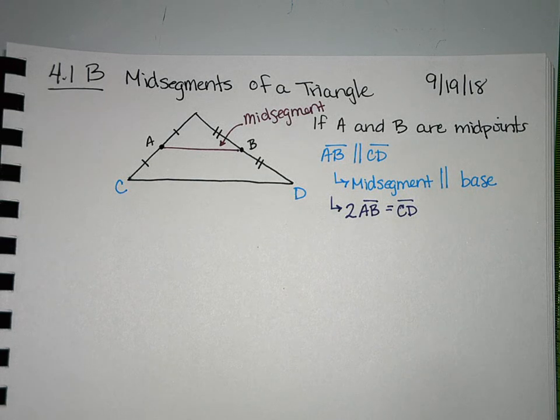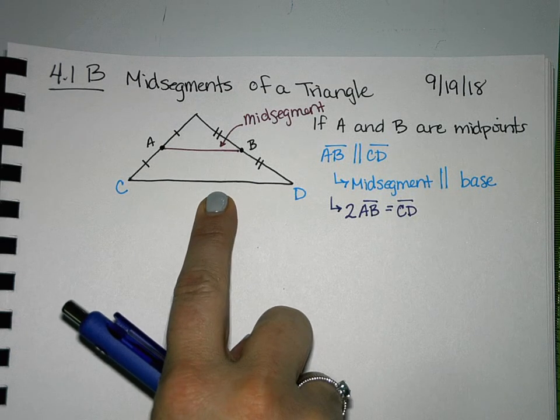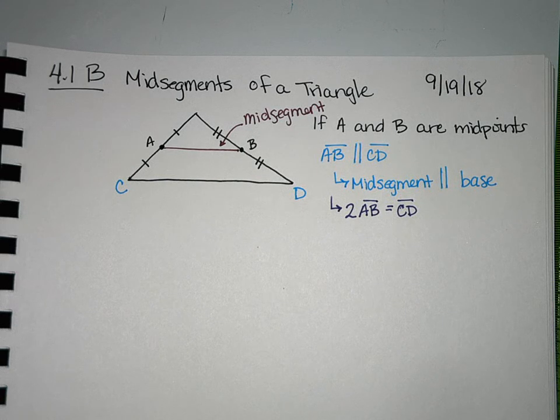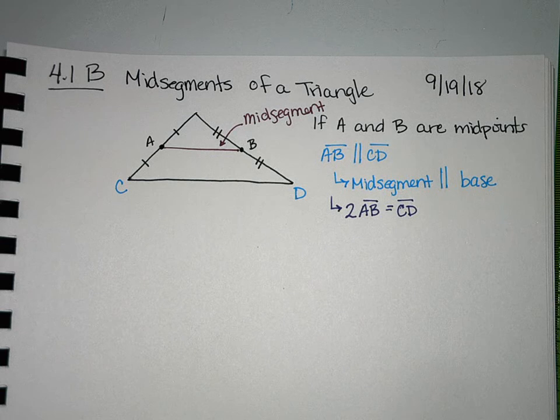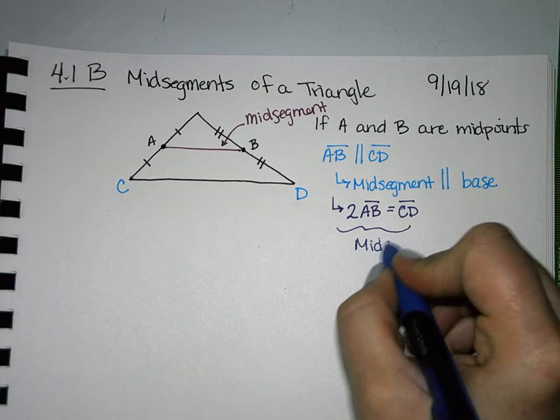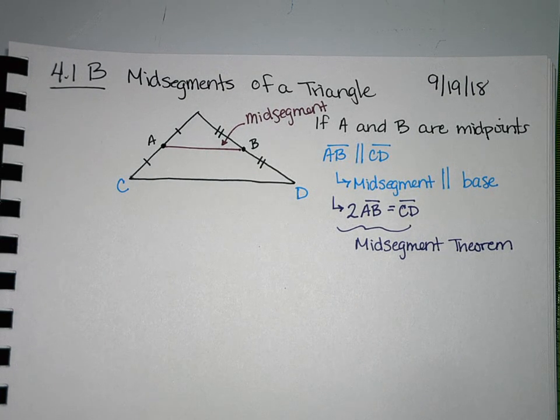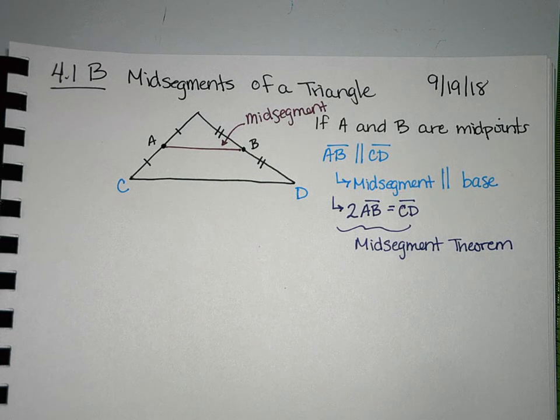So there's this relationship that the base is double your midsegment. So if we were to take 2 times this line in the middle, I would get the length of this line down here. This is the part of midsegments that we're going to focus on today, is just playing with this relationship between the midsegment and the other side. This relationship is the midsegment theorem. They're parallel, and the base is 2 times the midsegment.